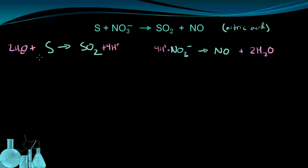Starting with the first half-reaction, the left side has an overall neutral charge and the right side has four positives, so this is plus four. For the second half-reaction, the right side has an overall neutral charge, but the left side has four positives and a single negative, giving me plus three overall.